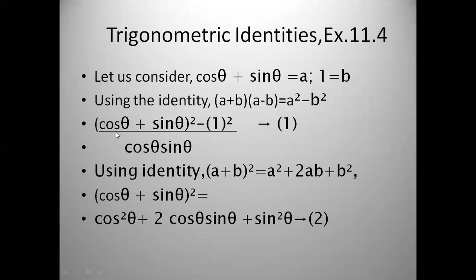So we get (cos θ + sin θ)² − 1², all divided by cos θ × sin θ. Now expand (cos θ + sin θ)² using the identity (a + b)² = a² + 2ab + b²: this gives cos²θ + 2 cos θ sin θ + sin²θ.